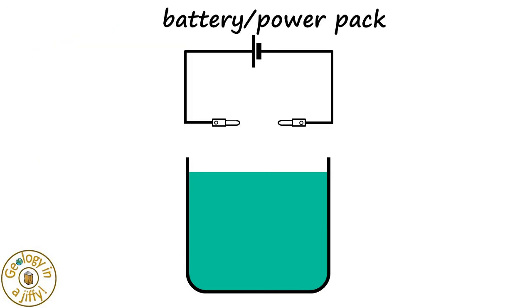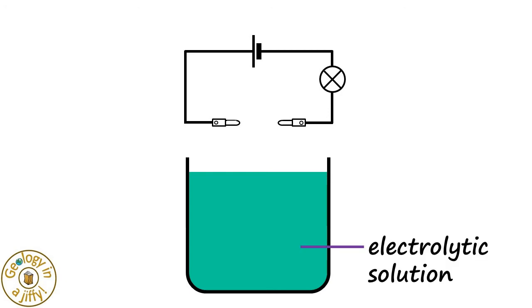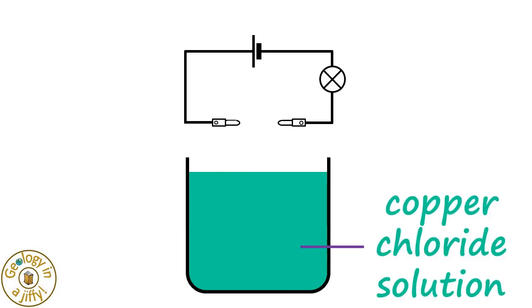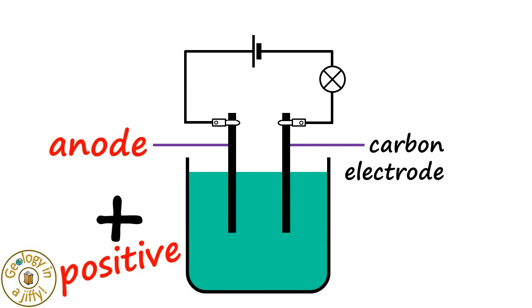If we make an electrical circuit, adding a lamp to see if an electrical current is flowing, and place this above our electrolytic solution, the copper chloride solution, we then join the two by placing two carbon rods called electrodes into the solution. The positive electrode being the anode, and the negative electrode being the cathode.